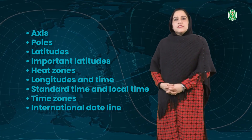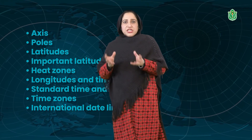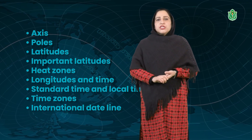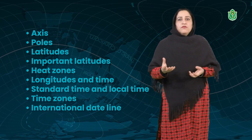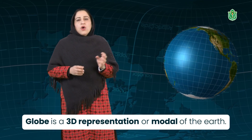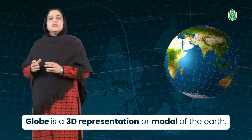We have studied that the earth is spherical in nature and is bulging at the center and flattened at the poles. So this representation can be best shown through a globe. The globe is a 3D representation of the earth. On these globes, we have various types of imaginary lines drawn so that we can show the position or location of a place properly.